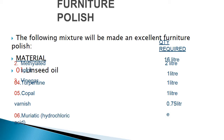Materials required to manufacture varnish: linseed oil — 16 liters; methylated spirit — 2 liters; vinegar — 1 liter; turpentine — 1 liter; copal varnish — 1 liter; and hydrochloric acid — 0.75 liters. All these ingredients are readily available in the market and can be purchased and mixed together to form the varnish.